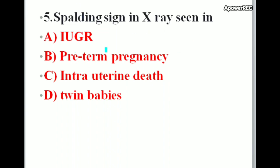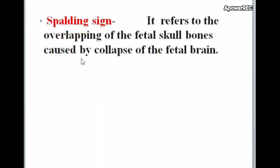Next question: Spalding's sign in X-ray is seen in — options: intrauterine growth retardation (IUGR), pre-term pregnancy, intrauterine death, twin babies. Correct answer is intrauterine death. Spalding's sign refers to the overlapping of the fetal skull bones caused by collapse of the fetal brain, indicating intrauterine death.